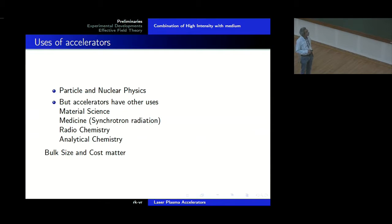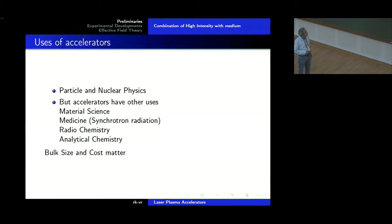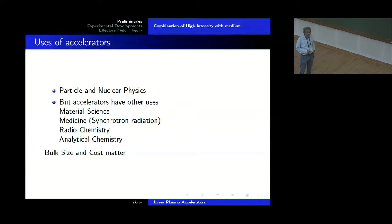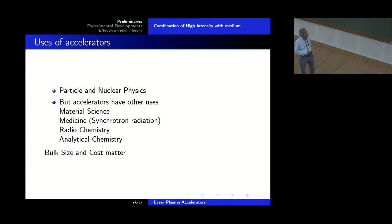Accelerators have many uses — normally we only think of particle and nuclear physics, but they also have uses like material science, medicine, radio chemistry, analytical chemistry, and other areas. If we need to build more efficient accelerators without demanding the very high beam quality required in particle physics — if we don't require that kind of monochromaticity or collimation — then it should be possible to build accelerators through a different principle, because bulk, size, and cost all matter when it comes to applications.